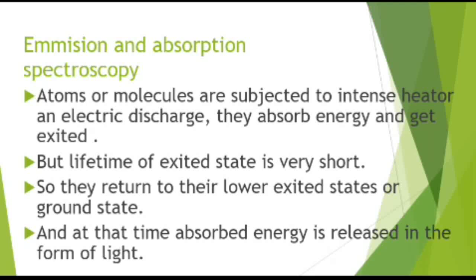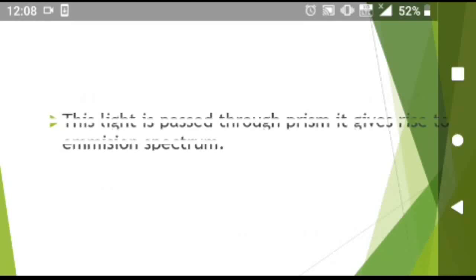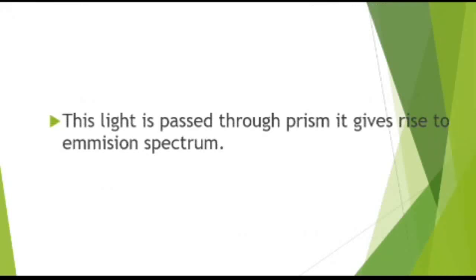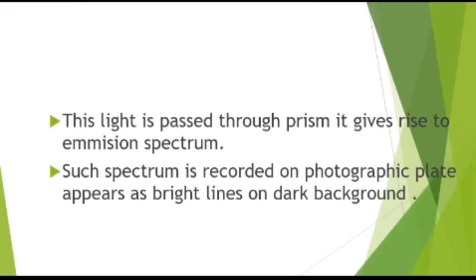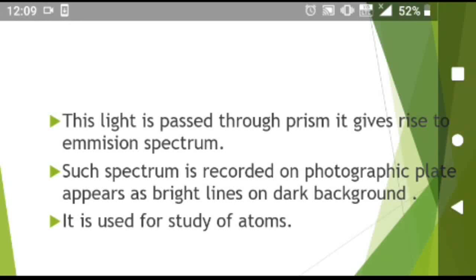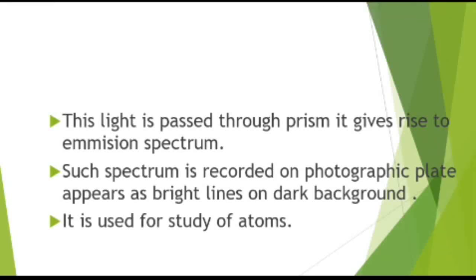When they return to their lower energy states or ground state, the absorbed energy is released in the form of light. This light is passed through a prism, and the resulting emission spectrum is recorded on a photographic plate. It appears as bright lines on a dark background. Emission spectroscopy is used for the study of atoms.